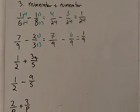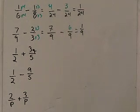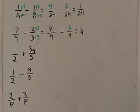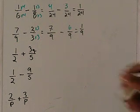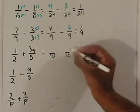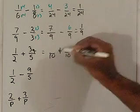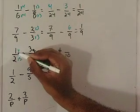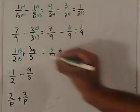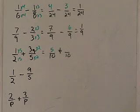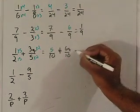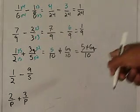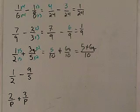Let's look at the next one: 1 half plus 3q over 5. So what would be a common denominator between 5 and 2? That would be 10, the smallest number that both 5 and 2 are divisible by. So 2 times what gives you 10? 5. So you multiply 1 times 5, which is 5. And 5 times what gives you 10? 2. So then you multiply 3q times 2, which is 6q. If you add these two together, you just get 5 plus 6q over 10, and you just leave it like that, because 5 and 6q are not like terms so they can't be added.